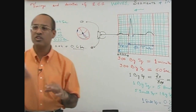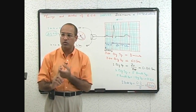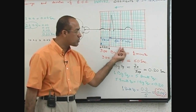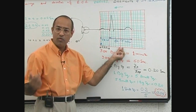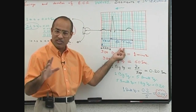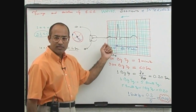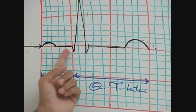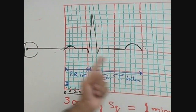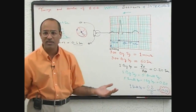Let's recap how we started the concept of timings and durations of different waves, segments, and intervals on the ECG paper. First you have to remember: one big square is 0.2 second, and one small square is 0.04 second. P wave is usually 2 and a half small squares, PR segment is 2 and a half small squares, QRS complex is 2 and a half small squares. But QT interval — from the beginning of QRS to the end of T wave — takes 10 small squares. Now you know all the durations in every combination.